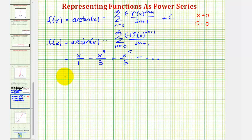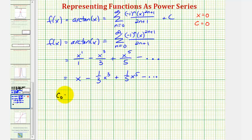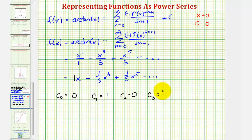Simplifying, the series begins x − (1/3)x³ + (1/5)x⁵ + ⋯. We need to be careful identifying coefficients: c₀ = 0 (no constant term), c₁ = 1 (coefficient of the degree one term), c₂ = 0 (no degree two term), c₃ = −1/3, c₄ = 0 (no degree four term), and c₅ = 1/5.